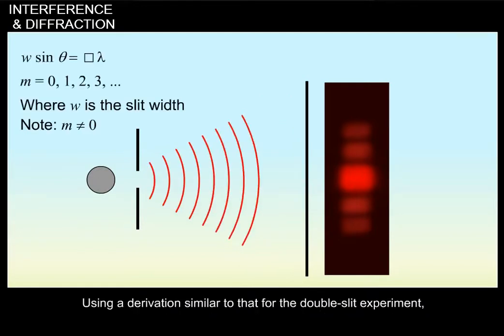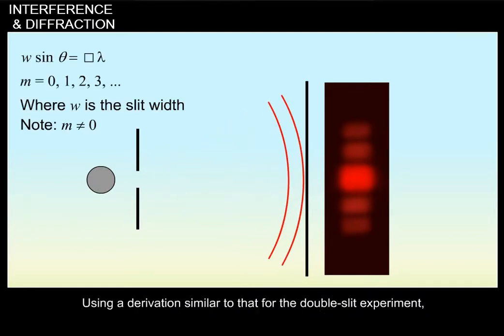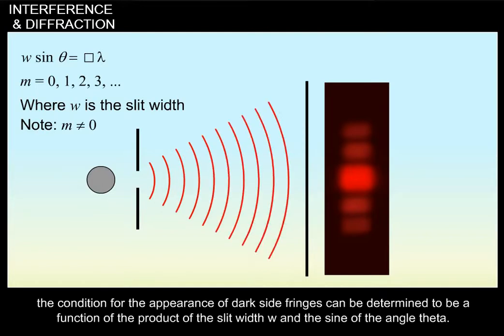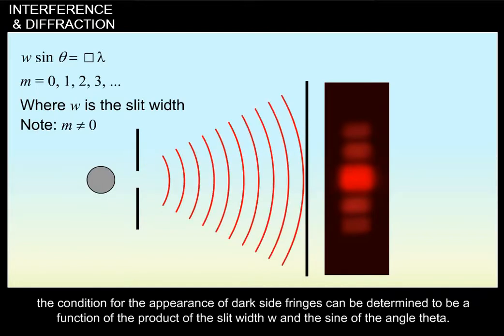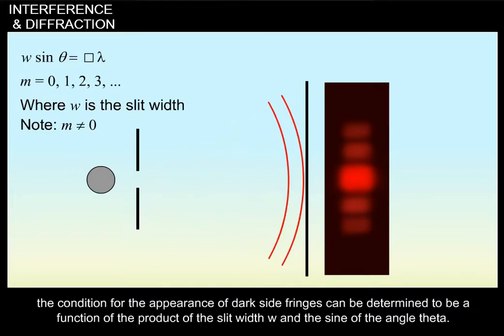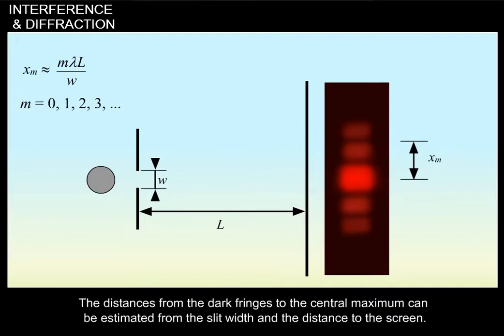Using a derivation similar to that for the double slit experiment, the condition for the appearance of dark side fringes can be determined to be a function of the product of the slit width w and the sine of the angle theta. The distances from the dark fringes to the central maximum can be estimated from the slit width w and the distance to the screen.